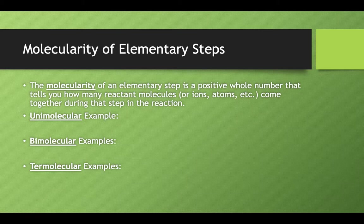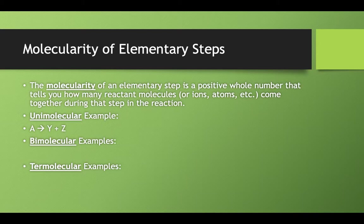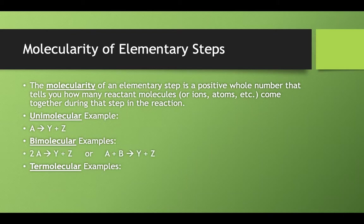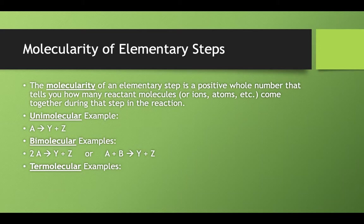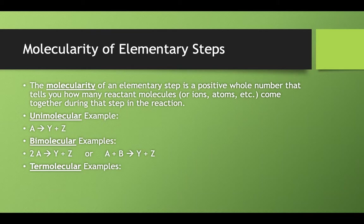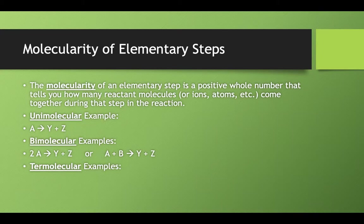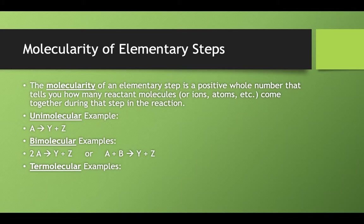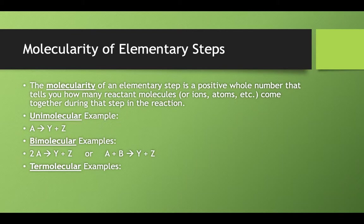As an example of what we would call a unimolecular elementary step, we just take the element A and turn it into two other things. There's only one reactant molecule or atom in that reaction. Or a bimolecular example: you take two atoms of element A and you smash those guys together to make some products, or maybe an atom of A and an atom of B. Either way, you have two atoms or molecules coming together to form products.